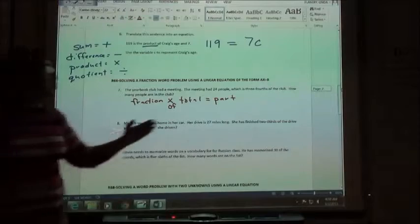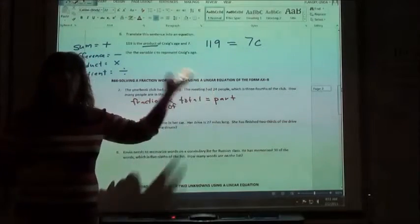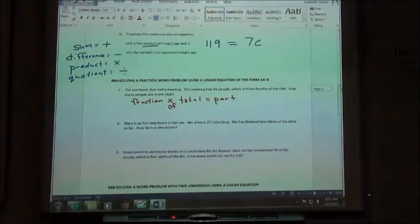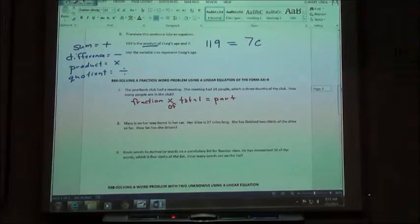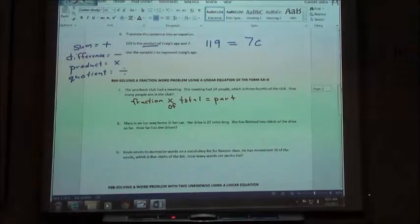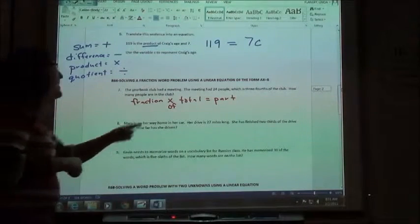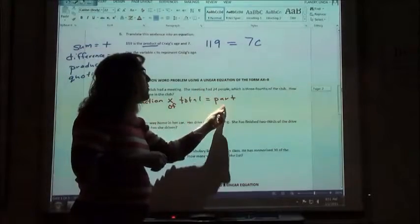So you want to think about, is this 24 just the part, or is it the total number of people? Well, in this case, we want three-fourths of the club. The club is the total number of people. There are more people in the club than went to the meeting, right? Not everybody shows up, just like class.